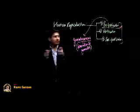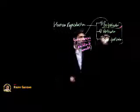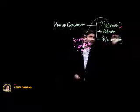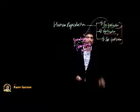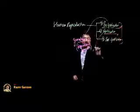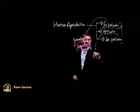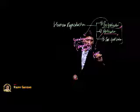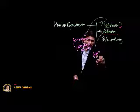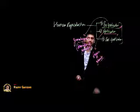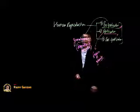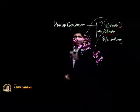Once gametes are formed, the male and female gametes will fuse together, and this process is called fertilization. In the fertilization phase, fusion of the male and female gametes takes place.